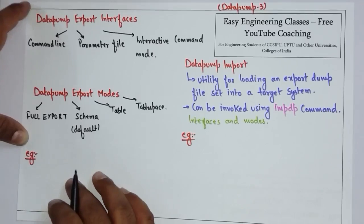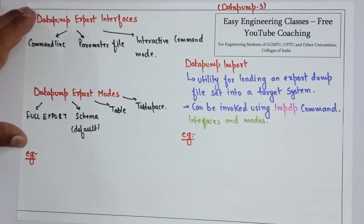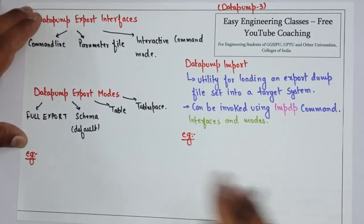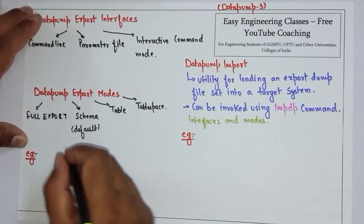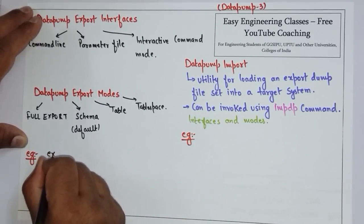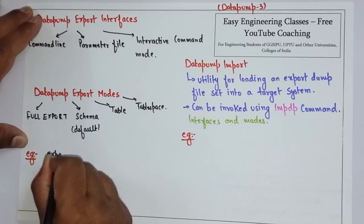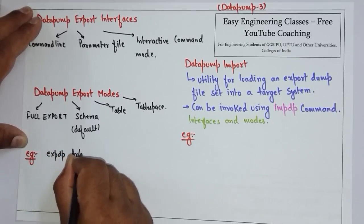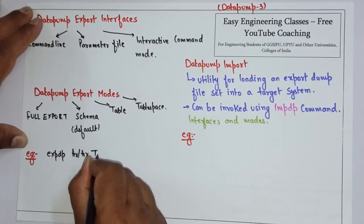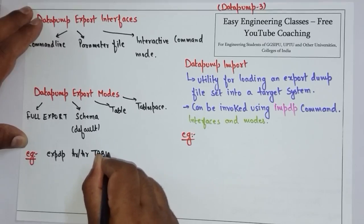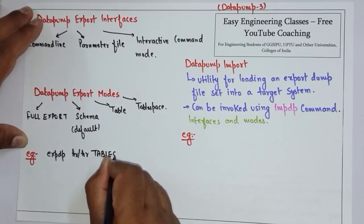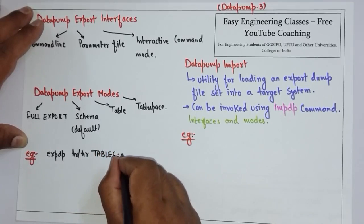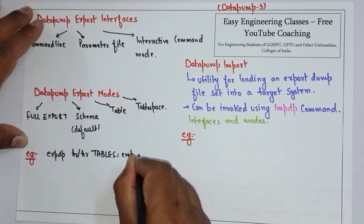Let's see an example of how we can use Data Pump Export. To use Data Pump Export you write a command like this. The command starts with expdp, then the username — for example, hr/hr — and then you specify the tables, for example emp and jobs.